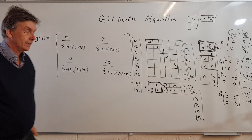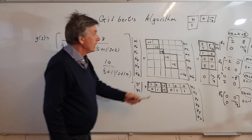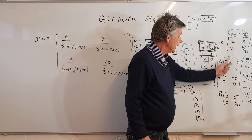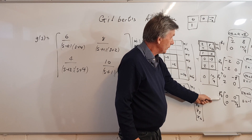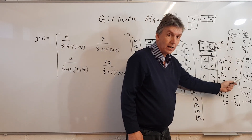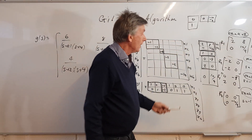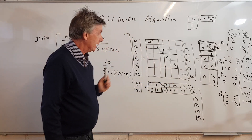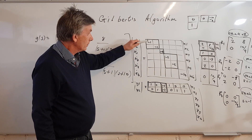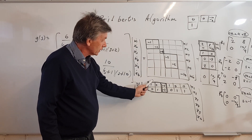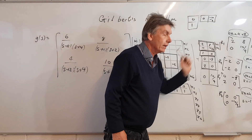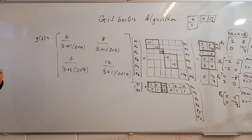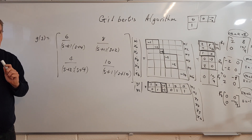To recap: we work out the partial fraction matrices R1 through R4, compute the rank of each matrix to determine the number of states, place the poles on the main diagonal of A, then choose B and C such that C×B equals the corresponding residue matrix for each pole. This gives a minimal state-space realisation. Hope you found that useful — look out for the next lecture.